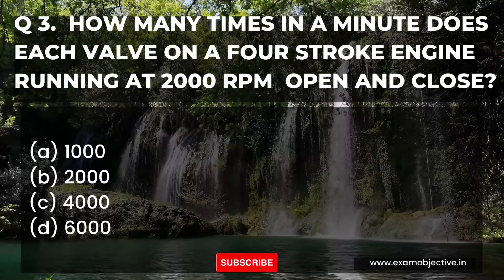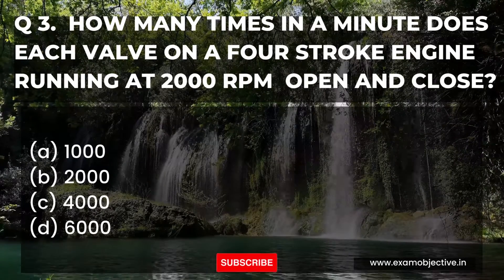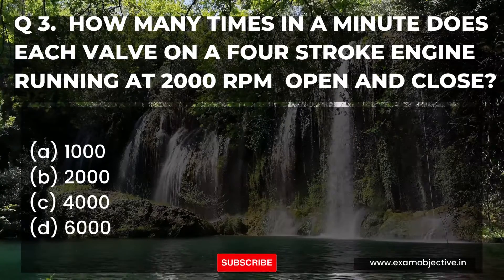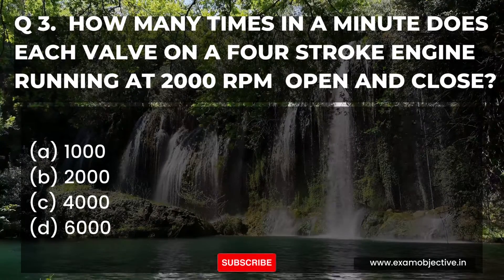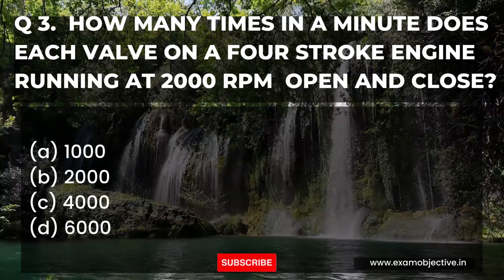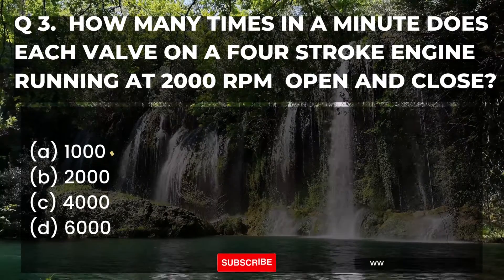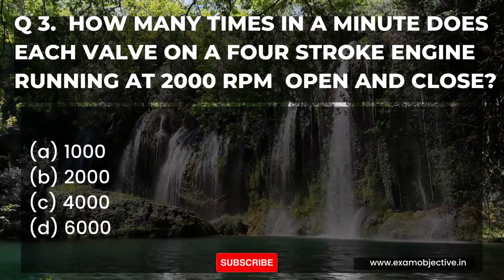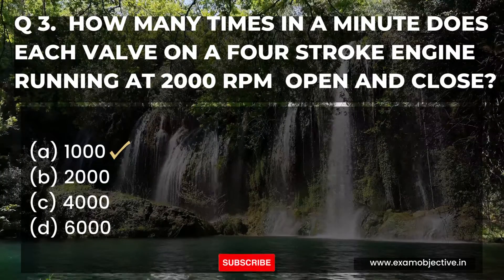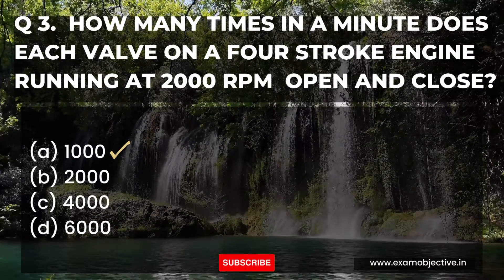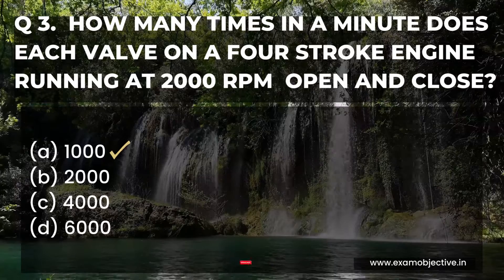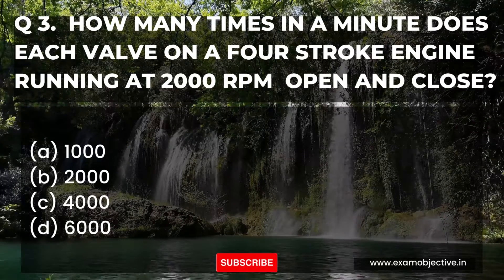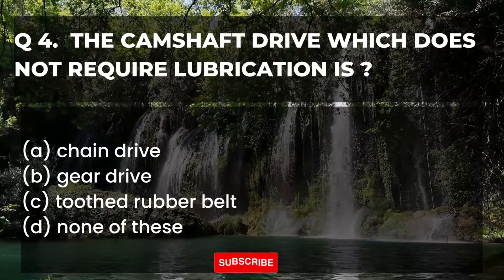Question number three: How many times in a minute does each valve on a four-stroke engine running at 2000 RPM open and close? Option A: 1000, B: 2000, C: 4000, D: 6000. The answer is option A, that is 1000 times.